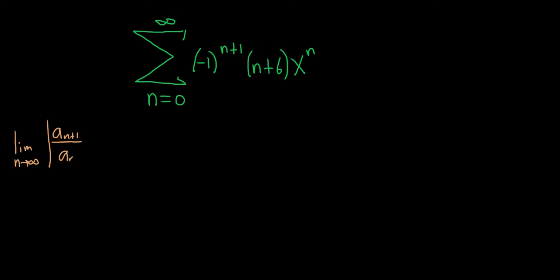one of three things will happen. If this limit is less than 1, the series will converge absolutely. If it's bigger than 1, the series will diverge. And if it's equal to 1, we have no information. In these problems, what we do is we take the limit and we purposely set it less than 1, because we're trying to force convergence — we're trying to find all of the values of x for which the series converges.